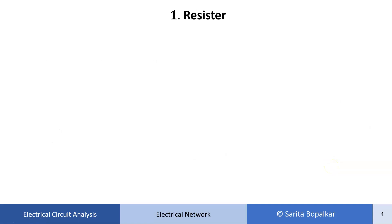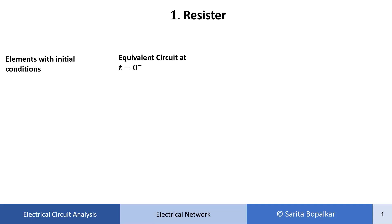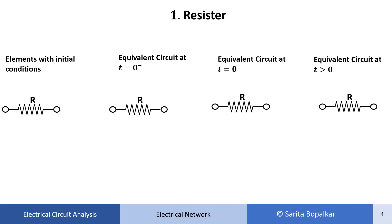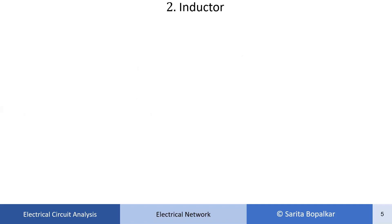Now we know we have to draw the equivalent circuit at t equal to 0 minus, t equal to 0 plus, and t greater than 0. So we should know how to represent the resistor, inductor, and capacitor for all three stages. For the resistor, we do not need to consider initial conditions since it is not an energy storing element, and it is represented as-is in all three stages.